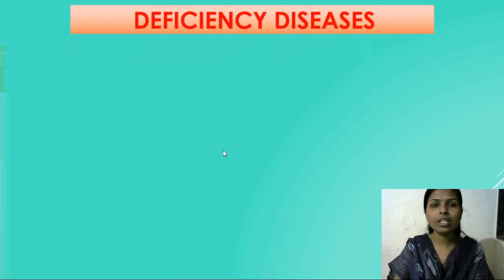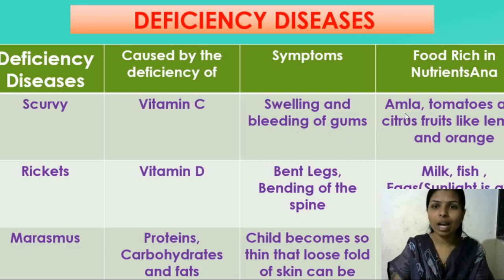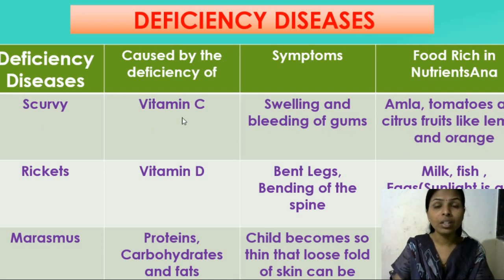Next we are going to discuss about Scurvy. Scurvy is caused due to the lacking of Vitamin C. The symptoms of scurvy are swelling and bleeding of gums. Foods rich in Vitamin C include amla, tomatoes, and citrus fruits like lemon and orange. So if we have to avoid this Scurvy disease, we have to take Vitamin C, which is present in these vegetables and foods.